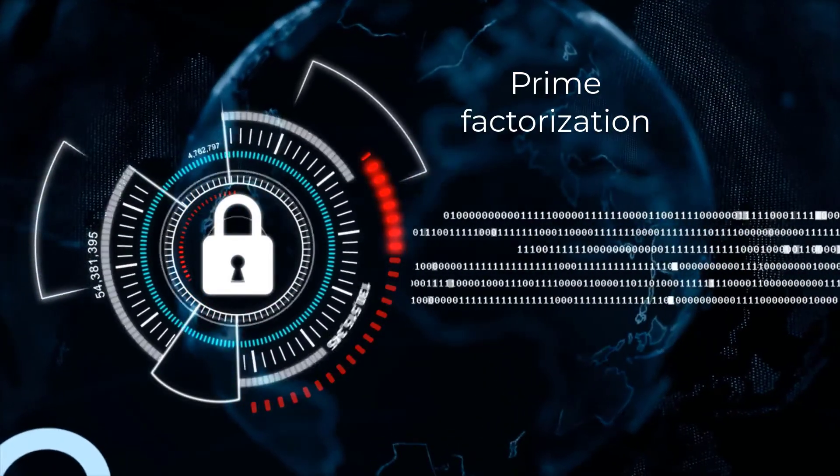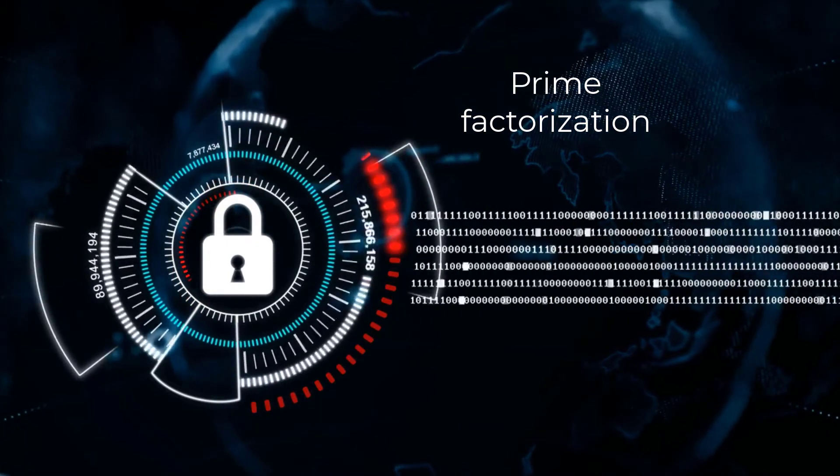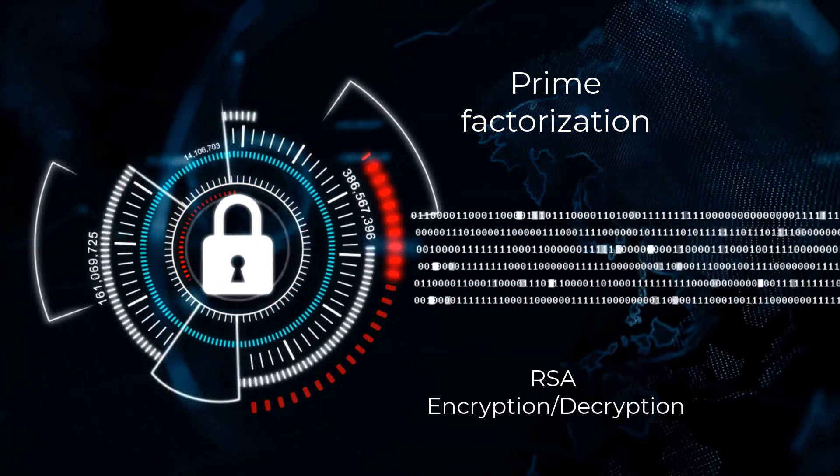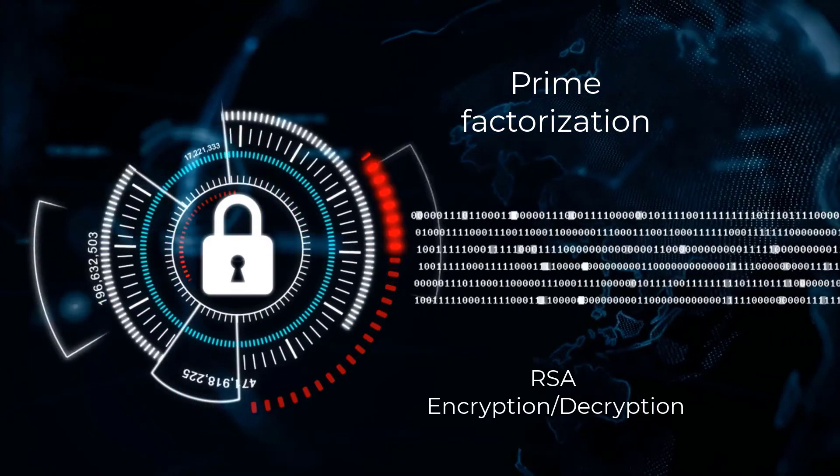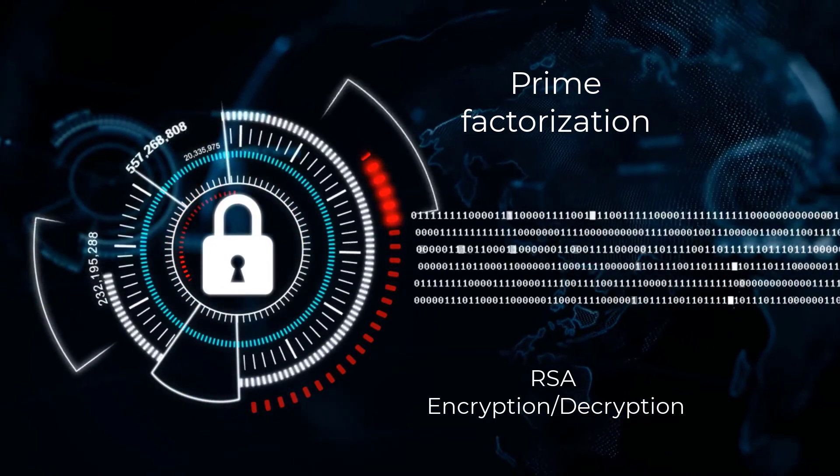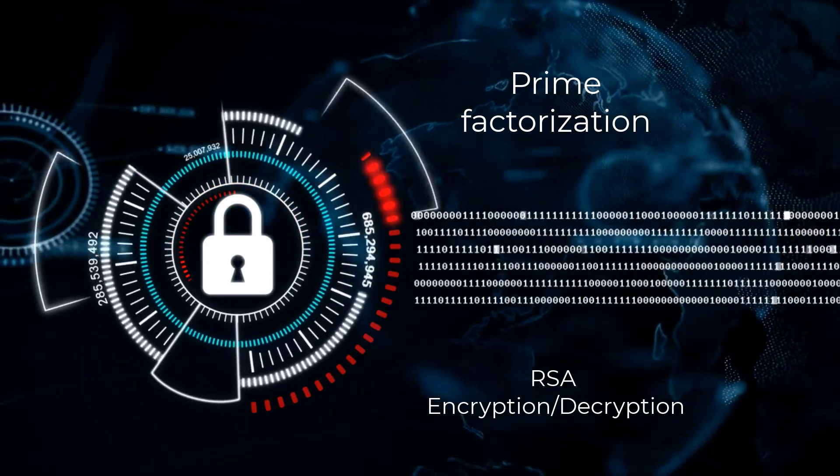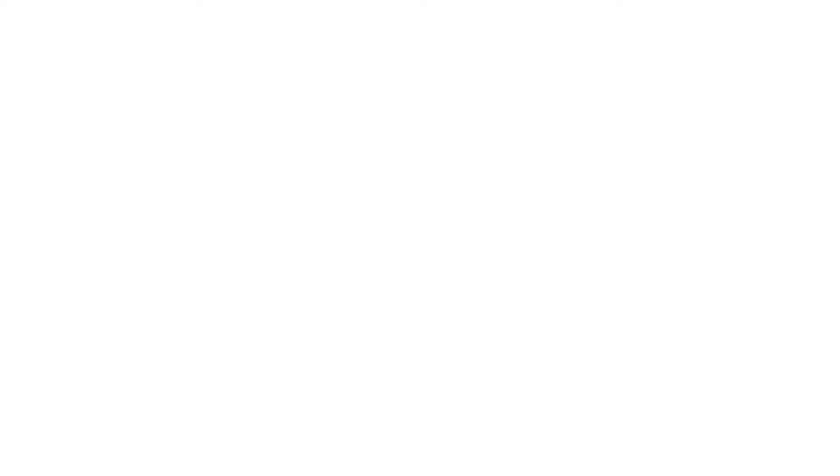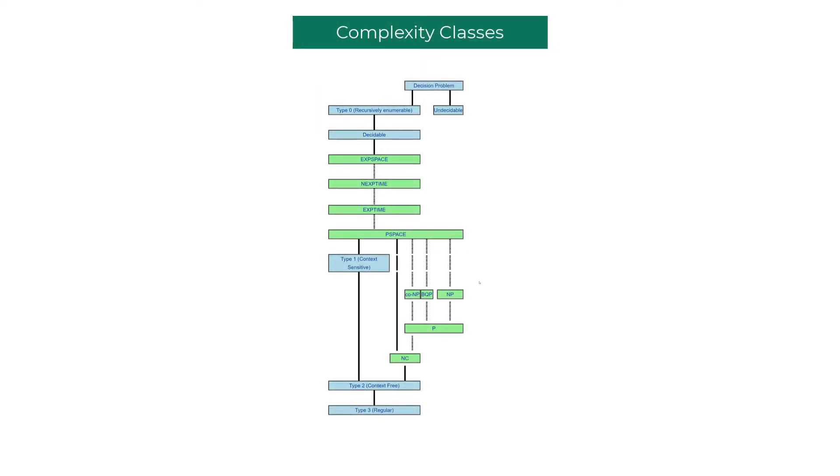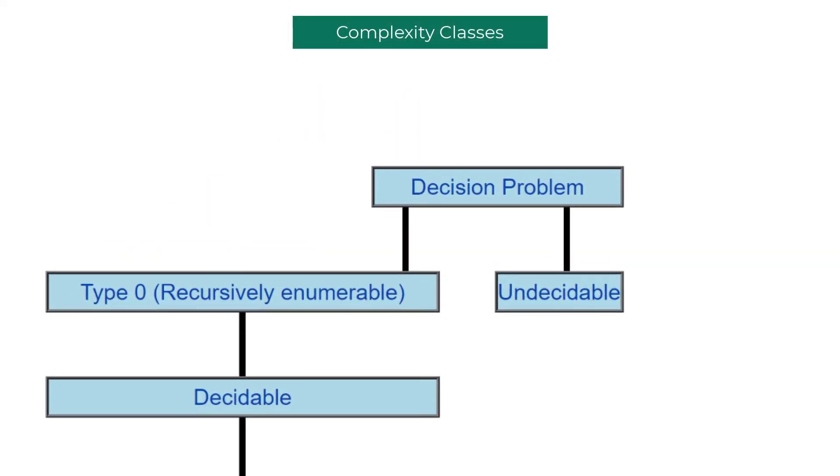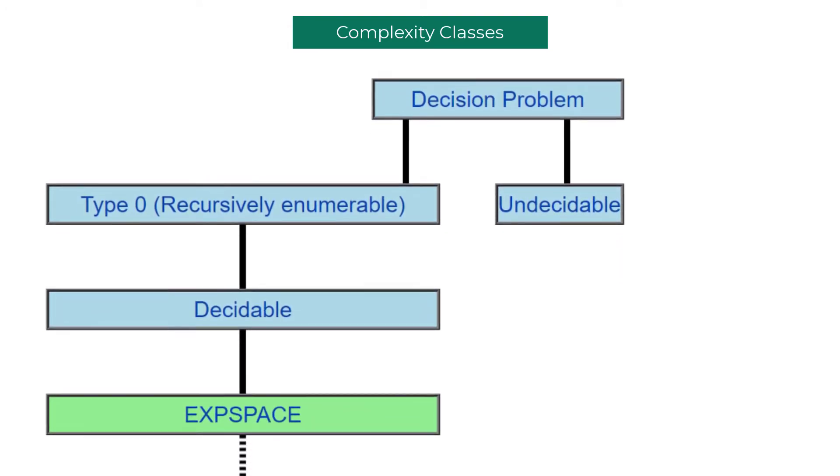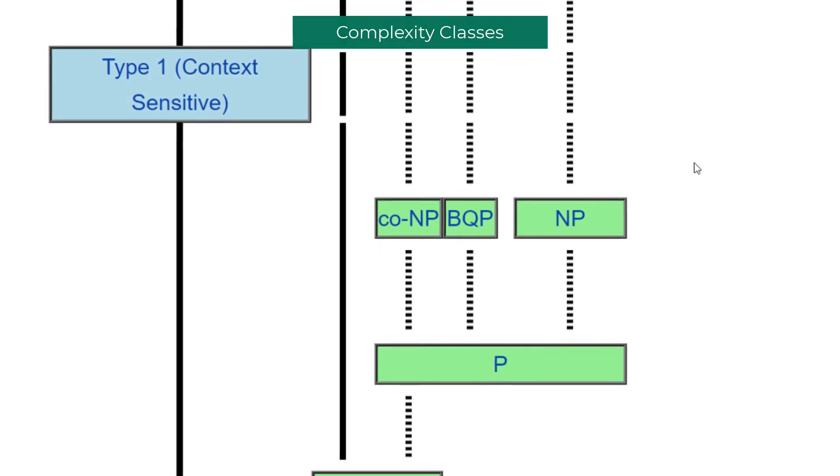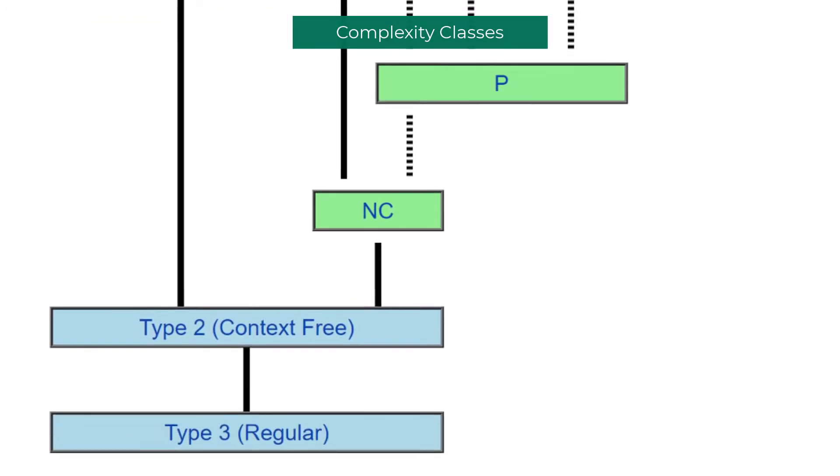If we do find a technique through which we solve these problems quickly, then all the systems that we have built based on the assumption that these problems are hard to solve are going to collapse - no more privacy or security. That is why numerous computer scientists across the world spent countless hours trying to find fundamental limitations in terms of time and space complexity while solving computational problems.